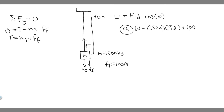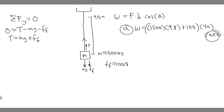We add this up and keep in mind what the cosine of theta is. This is the force, times the distance — the distance is 40 meters because that's how far we move it up — times the cosine of theta. The angle theta is between the direction of travel and the force. The tension is going upward and the elevator travels upward, so they're in the same direction. The angle between them is zero, and cosine of zero is one, so we can just ignore it. The work equals 1500 times 9.8 plus 100, then multiplied by 40.